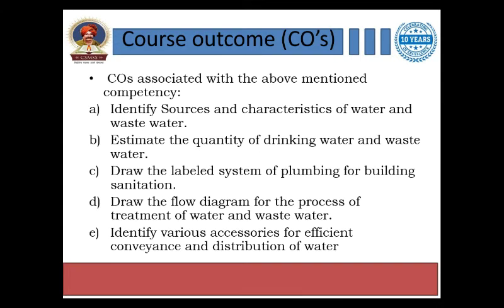The course outcomes of this course are the main things which you will understand and be able to solve any problem related to them. Number one: identify source and characteristics of water and wastewater. Two: estimate the quantity of drinking water and wastewater. Three: draw the labelled system of plumbing for building sanitation. Four: draw the flow diagram for the process of treatment of water and wastewater. Five: identify various accessories for the efficient conveyance and distribution of water.